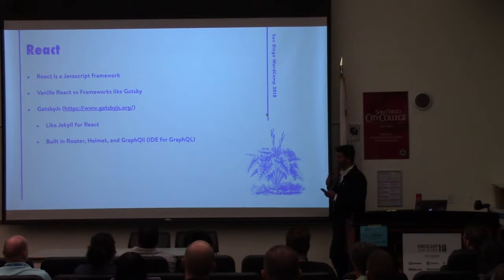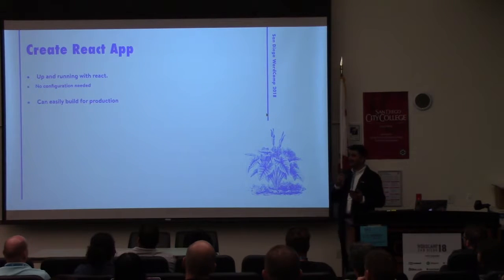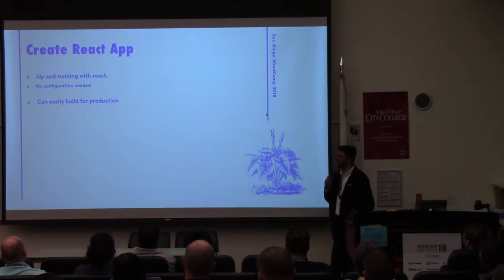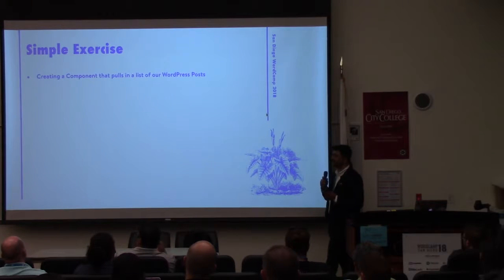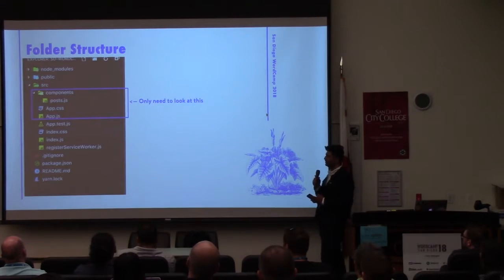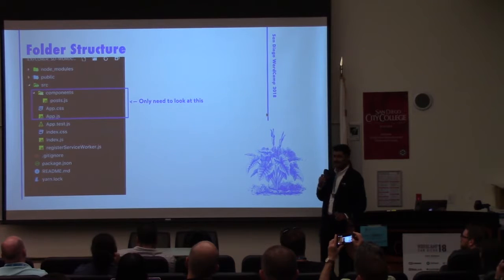We're going to be using vanilla React. It lets you get up and running with React without any configuration, though that can take a few days when you try to do it yourself. It can also allow you to build for production really easily. We're going to do a simple exercise — create a component that pulls in a list of all our WordPress posts through the API. Let's take a look at the whole structure: the two things we really need to look at are the app.js file and a component folder with a post.js file.